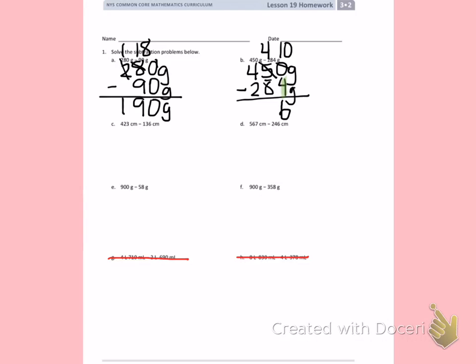Now I look at my tens place. And again, the bigger number is on the bottom. When the bigger number is on the bottom, I need to regroup. The 4 turns into a 3, and the 4 in the tens place turns into 14. 14 minus 8 is 6. 3 minus 2 is 1. So my answer is 166 grams.